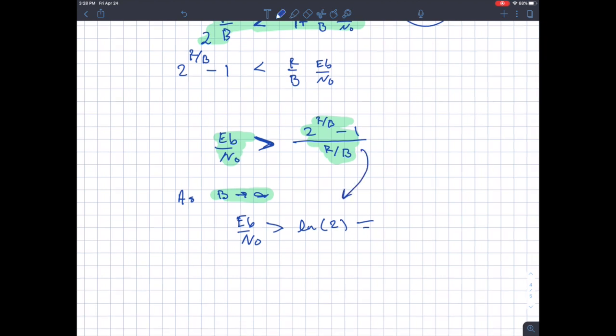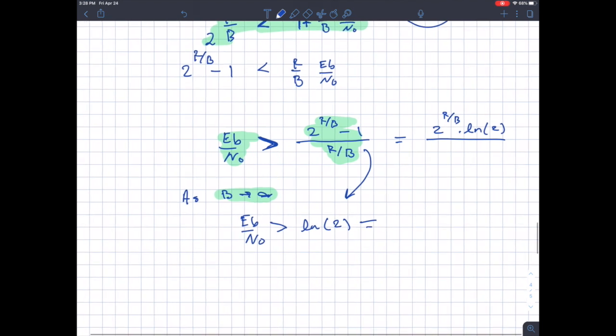So bandwidth going to infinity, you end up with this limit, which again is just L'Hopital's rule. So you take the derivative of the top, and that's where the log 2 business comes in. And L'Hopital's rule says take the derivative of the top, which would be 2 to the R over B times the log of 2. The derivative of 1 is 0. Divide by the derivative of the bottom. I'm taking the derivative with respect to R over B. I'm letting R over B go to 0. Then on the bottom, I just get a 1. And as R over B goes to 0, 2 to the 0 goes to 1, and I get log 2.